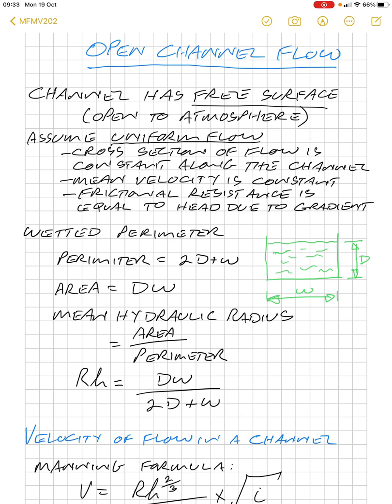Secondly, we're assuming that we have uniform flow through the channel. This means that the cross-section of the flow is constant along the channel—it's not getting wider or narrower or deeper, it's the same all the way along.